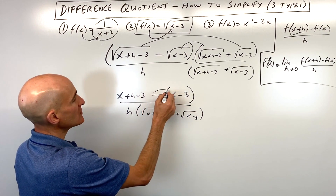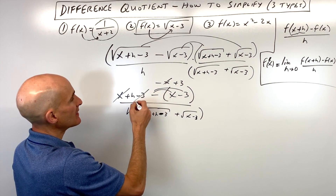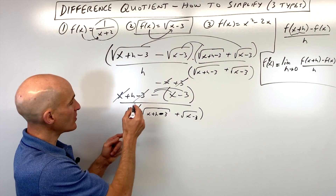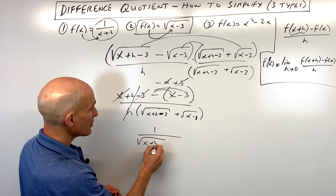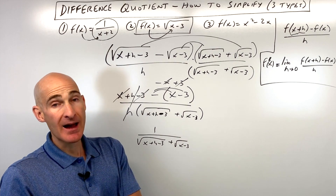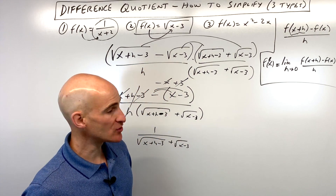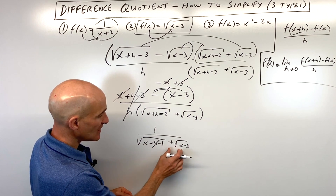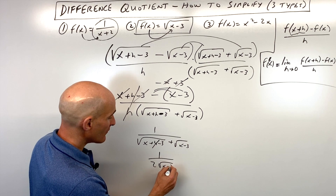Distributing the negative gives negative x plus three. The x's cancel, the negative three and positive three cancel, leaving h in the numerator. That h cancels with the h in the denominator, leaving one over square root of x plus h minus three plus square root of x minus three. You can stop there for the difference quotient. For the derivative, take the limit as h approaches zero — the h cancels out, giving one over two times the square root of x minus three.